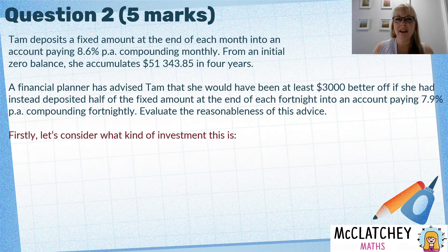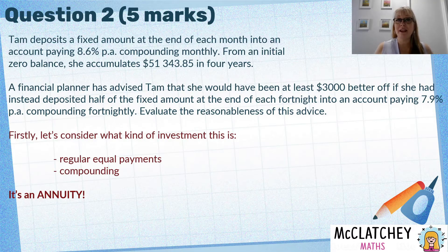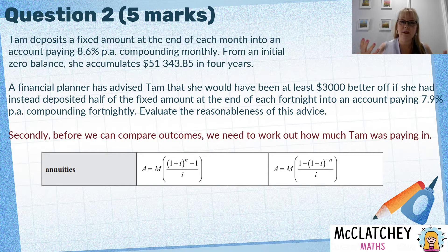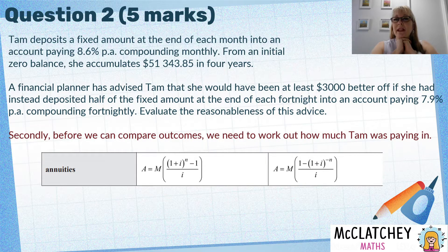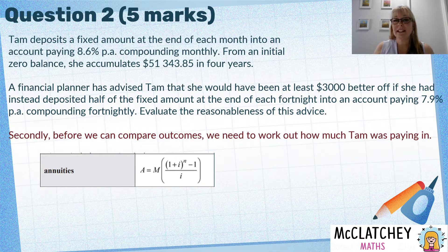Firstly, what kind of investment has TAM actually followed? Has she just been putting money in the bank or has she got something special going on? We've got regular equal payments — we just don't know how much they are — and an element of compounding. That tells me that's an annuity: regular payments of the same amount plus compounding is an annuity. Before we can work out whether the financial advisor's approach is better, we need to work out how much TAM's been paying and pick a formula. We've got our formula sheet: the first one with the positive power, the second with the negative power. Positive power means you're adding to your investment; negative power means you're taking away. So we want the positive formula here.